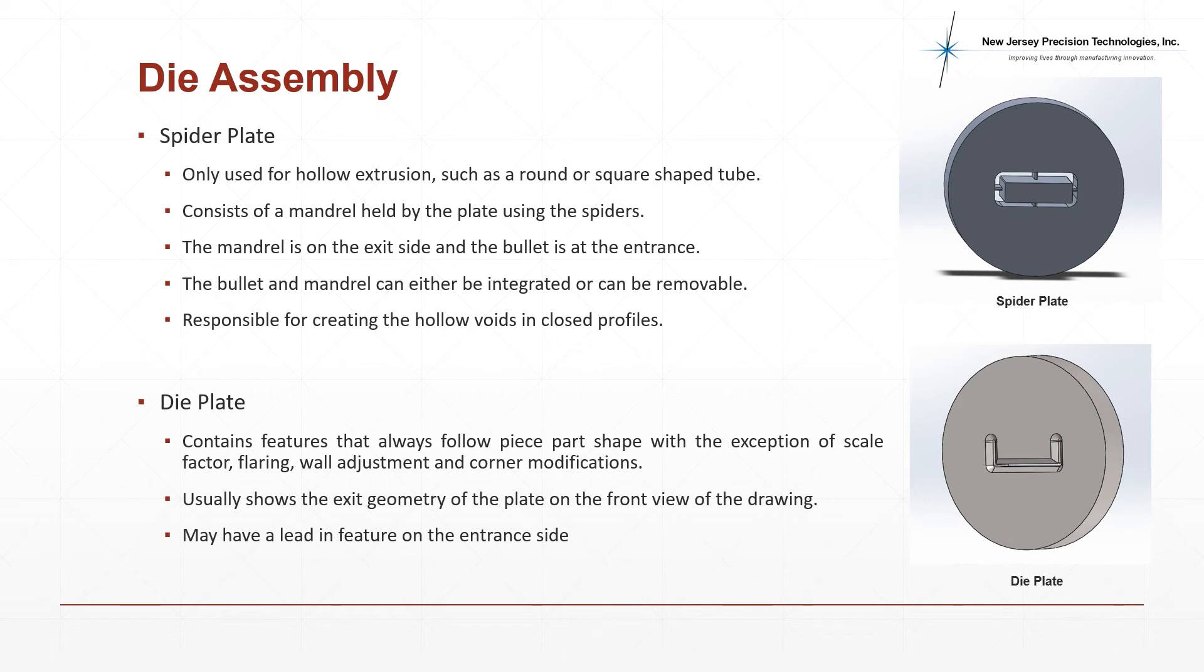In cases where hollow profiles have to be extruded, we use a spider plate. This plate consists of a mandrel located on the exit side and a bullet at the inlet side which are responsible for imparting the hollow profile as the polymer melt flows around it. The bullet and mandrel can either be integrated or removable.